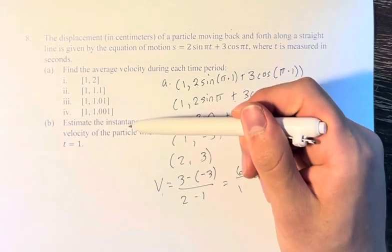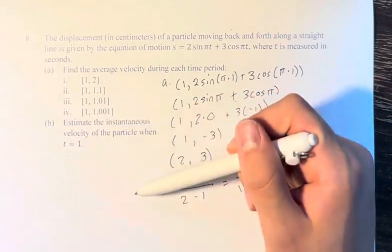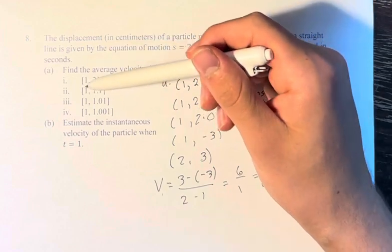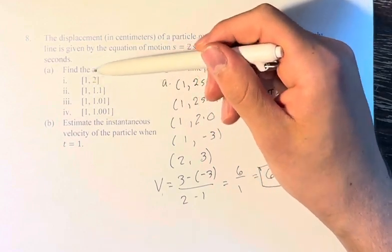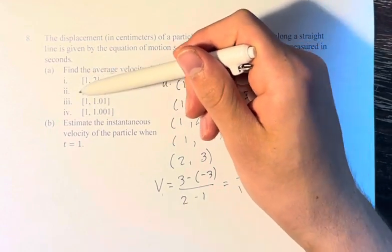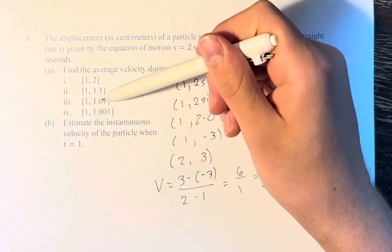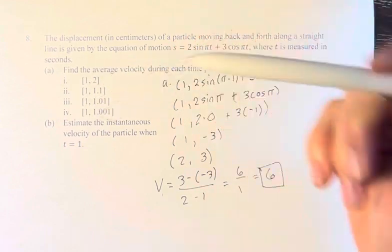Part B: we're asked to estimate the instantaneous velocity of the particle when t equals 1. If you notice, these intervals go from being relatively large, 1 to 2, then they get smaller, 1 to 1.1, 1 to 1.01, 1 to 1.001.